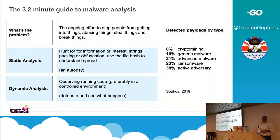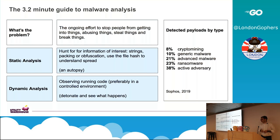So the 3.2-minute guide to malware analysis — time me, see if I get it. The general problem, and the reason why we do this, is because there's an ongoing effort to stop people from stealing stuff. Generally, if you want to get into somebody's network, you have to send them something, get them to run it, it's going to do other things, and we don't really like that.